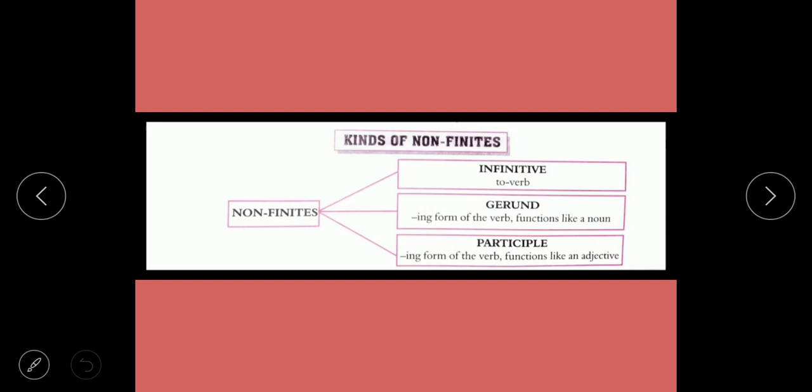Kinds of non-finite verbs: Infinitives — 'to' plus verb; Gerund — the '-ing' form of the verb that functions like a noun; and Participle — the '-ing' form of the verb that functions like an adjective. Students sometimes confuse gerund and participle since both are in '-ing' form, but participle functions like an adjective while gerund always functions like a noun.